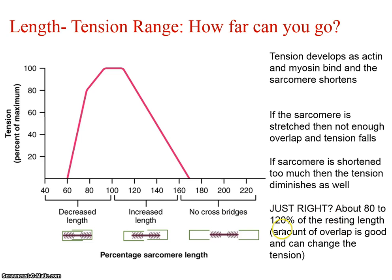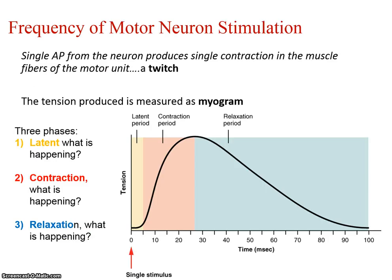You have to have a certain amount of overlap at rest so that you can generate force when the muscle contracts. Force is generated by this binding, and then we multiply this by the number of sarcomeres involved. The frequency of motor neuron stimulation also has an influence on that force that's generated.